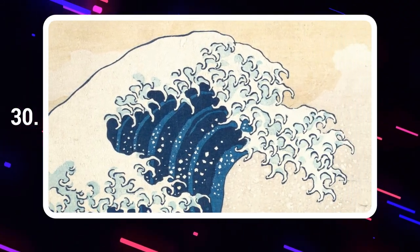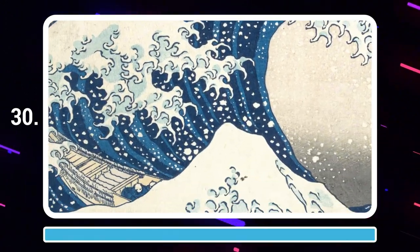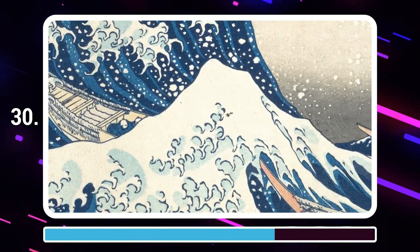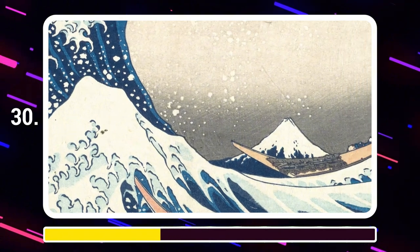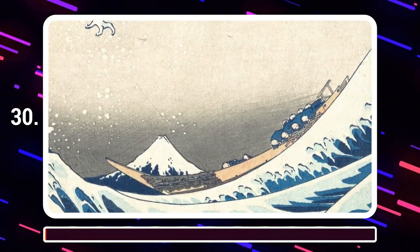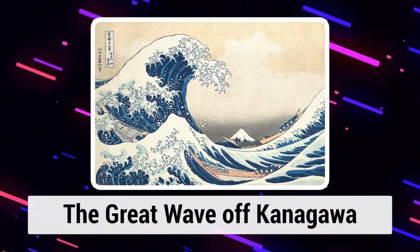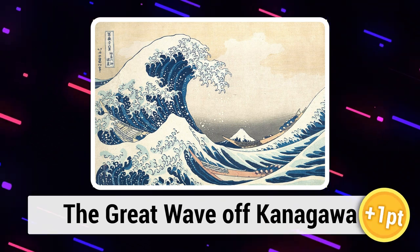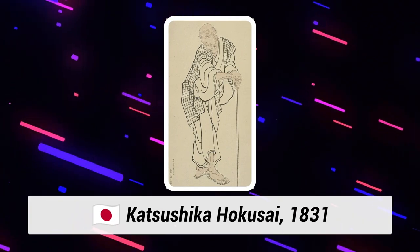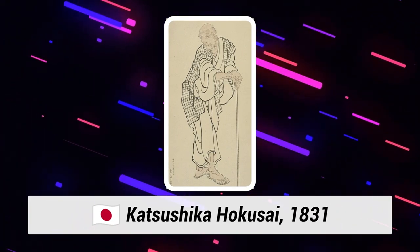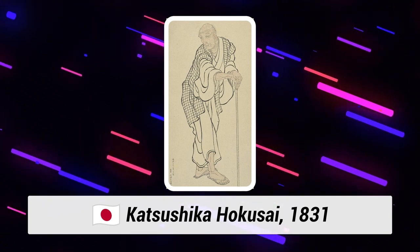What's the name of this painting? The Great Wave off Kanagawa by Japanese artist Katsushika Hokusai, in 1831.